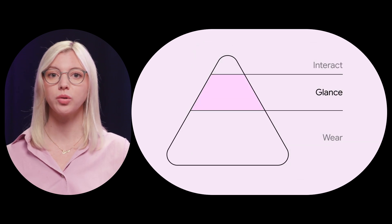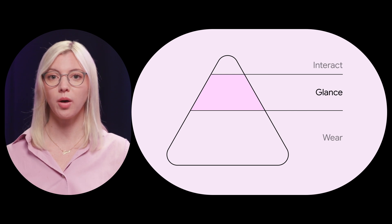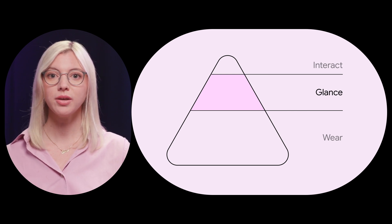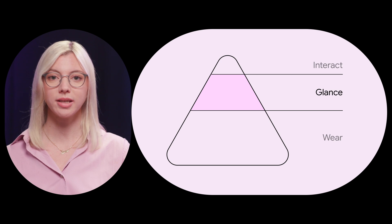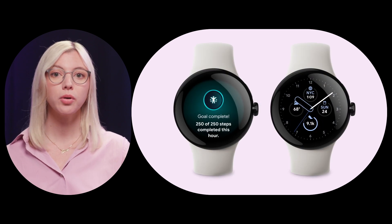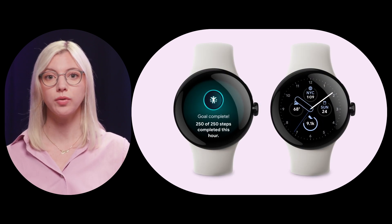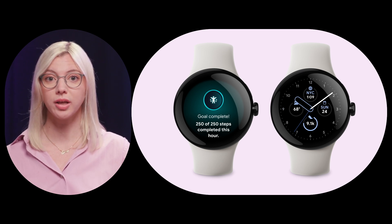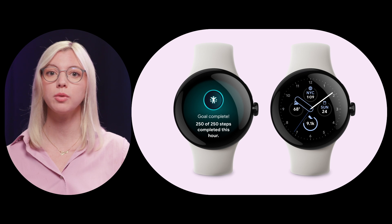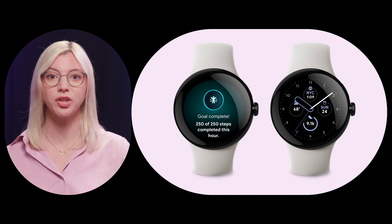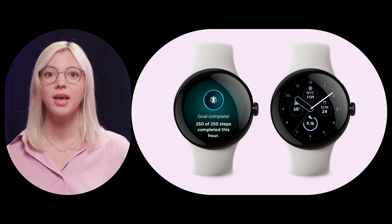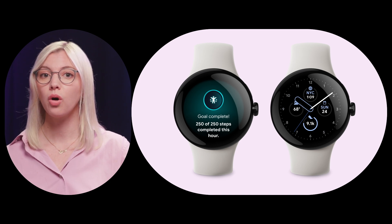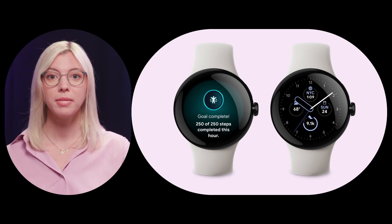The next layer in the pyramid is called Glance. This is where you have the biggest opportunity to be the most helpful to users. Many users glance at their watch without interacting with it, for example when checking their fitness progress or viewing incoming notifications. We should bring as much value to the Glance layer as possible by surfacing the most relevant and important information at the right time. This lets users decide if they need to take action now or if they can wait until later, minimizing distractions.